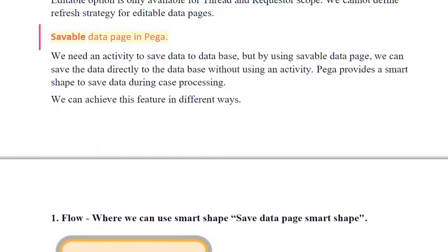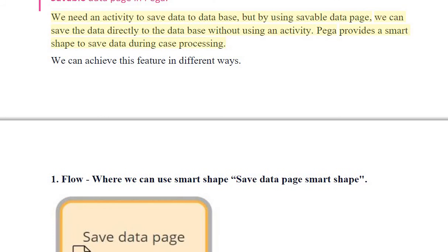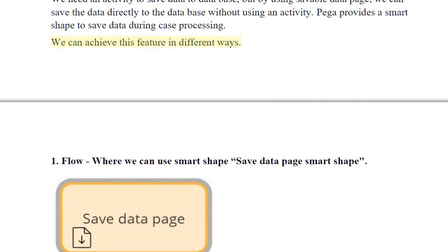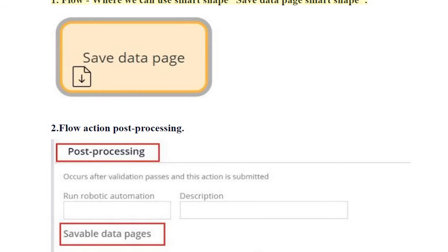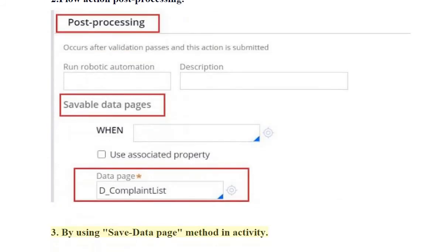Saveable data page in PEGA: Normally we need an activity to save data to the database, but by using a saveable data page, we can save the data directly to the database without using an activity. PEGA provides a smart shape to save data during case processing. We can achieve this in different ways: 1. In a flow, using the save data page smart shape. 2. Flow action post processing. 3. By using the save data page method in an activity.